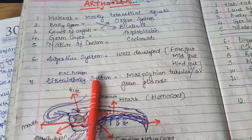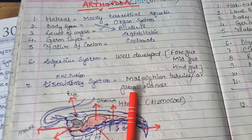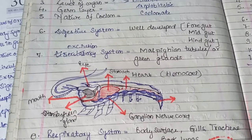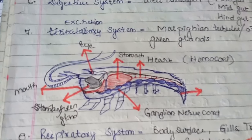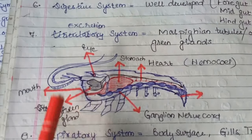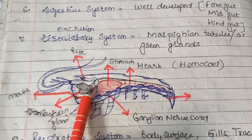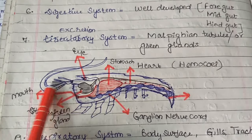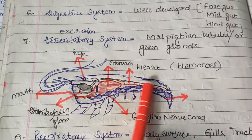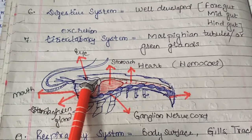Regarding the excretion system, in these organisms Malpighian tubules and green glands are found, which work as kidneys and help in excretion. You can also see the figure of green glands here. This structure is also called the antennal gland because these glands are found near the antenna. It has a tube-like structure and is called the antennal green gland, also because of its green color.